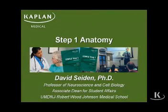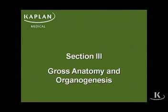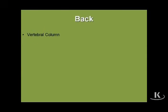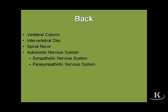We'll now proceed with our discussion of gross anatomy of the adult, starting with the back and nervous system. We will cover the vertebral column first, then intervertebral discs and related issues, the spinal nerve, and then spend a fair amount of time talking about the autonomic nervous system.